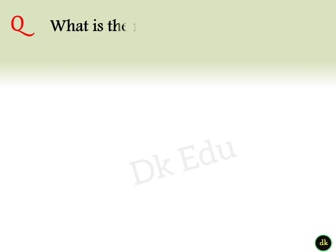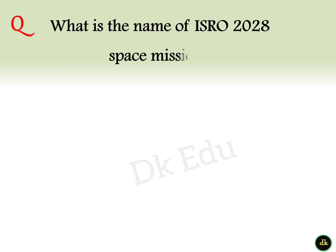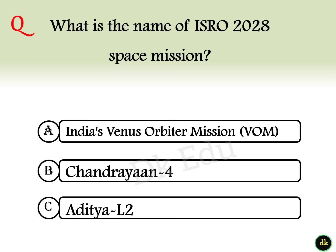6th question: What is the name of ISRO's 2028 space mission? Answer option A: India's Venus Orbiter Mission.